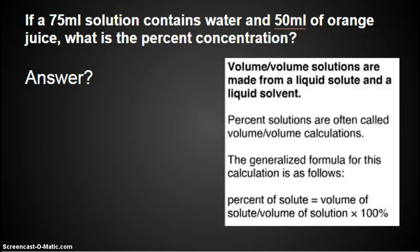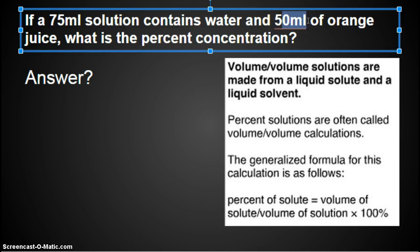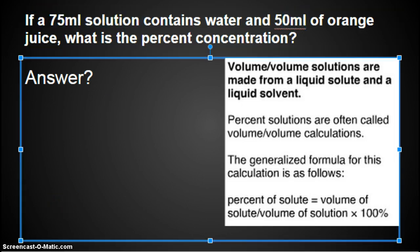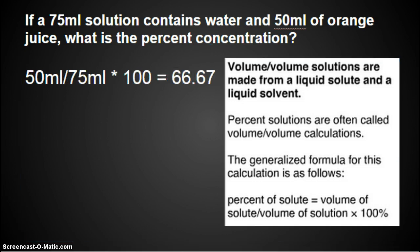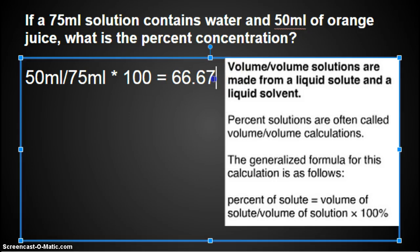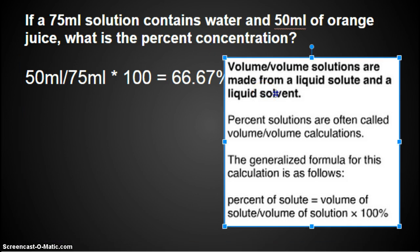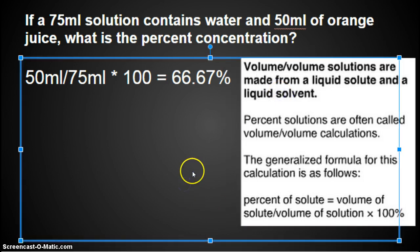Let's do another one. If a 75 milliliter solution contains water and 50 milliliters of orange juice, what is the percent concentration? List what we know. The 50 milliliters is our orange juice, which is the solute. 75 milliliters is our solution. What's your answer? 50 divided by 75 times 100 equals 66.66 percent. And that would be your final answer.